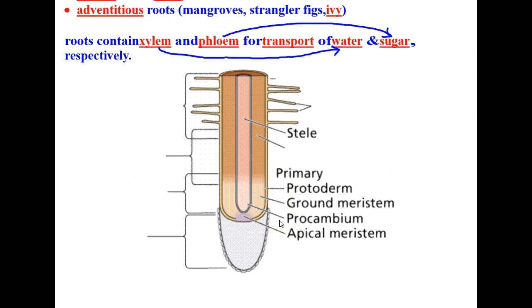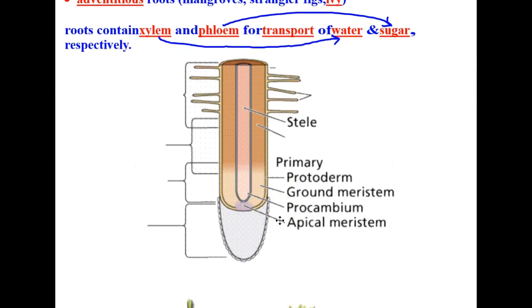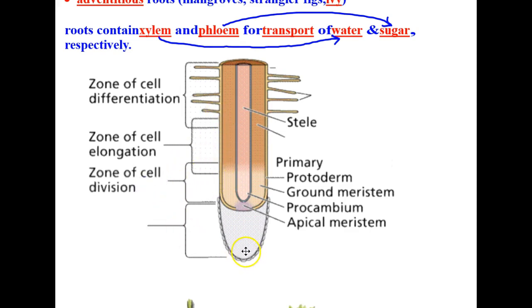Let's take a look at a root diagram and label its various structures. We'll start off with the zone of cell differentiation, which is this part of the root itself. Then there's the zone of cell elongation, kind of this part right here. The zone of cell division, and the root cap.